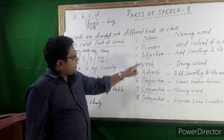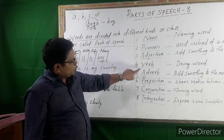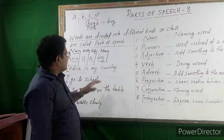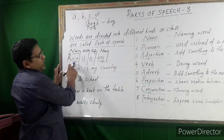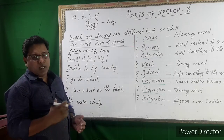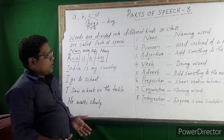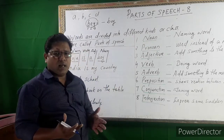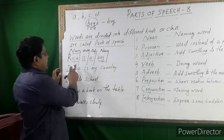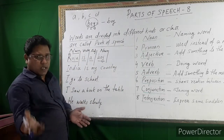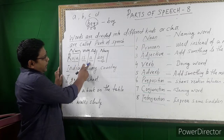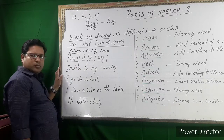Parts of speech are eight: noun, pronoun, adjective, verb, adverb, preposition, conjunction, interjection. Noun is a naming word — Raju is a noun. 'Is' is a verb. 'A' is an adjective. Boy is also a noun. Noun is the name of a person, place, animal, idea, or thing. Raju is a proper noun, and boy is a common noun. We will study the kinds of nouns next.